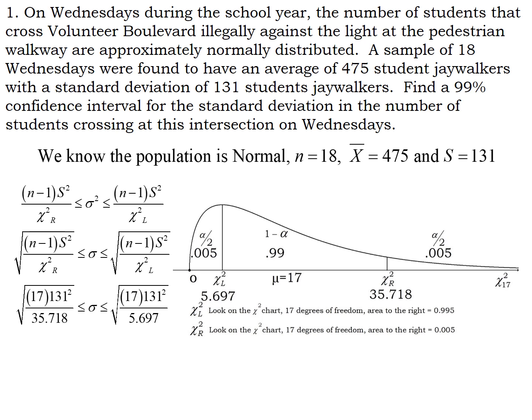Plugging in all values: n minus 1 is 17, s is 131, and our right chi-squared score is 35.718. Take the square root of 17 times 131 squared divided by 35.718 — let the calculator do all the work. When you do that for both terms you should end up with a standard deviation between 90.38 and 226.29. Notice our confidence interval is not in point-estimate plus-or-minus margin-of-error format — that only happens with t and z scores. You can write this as an inequality or as an interval.